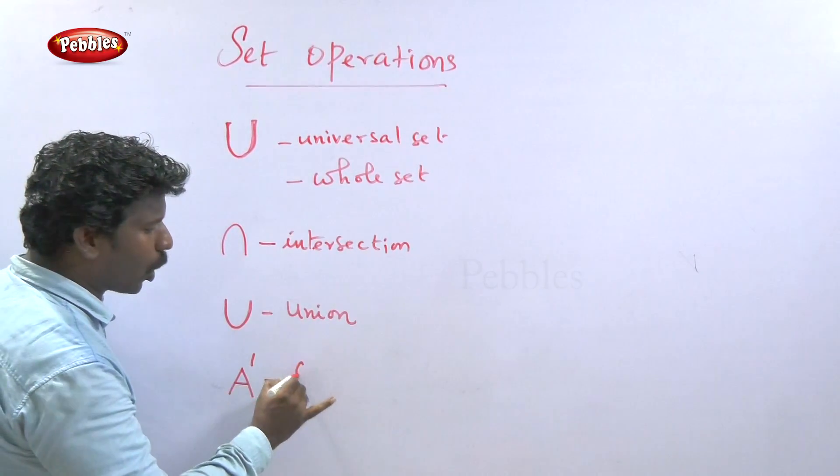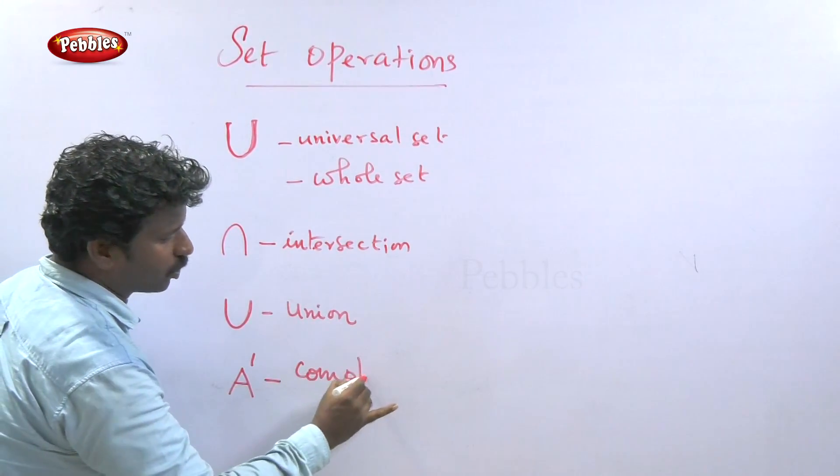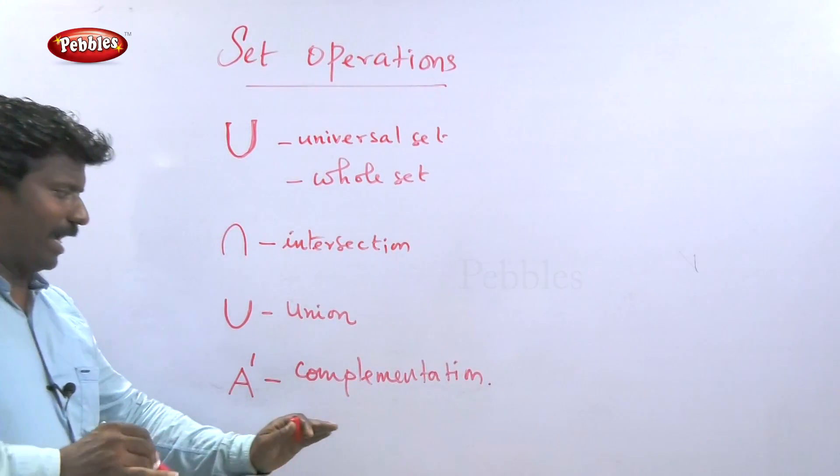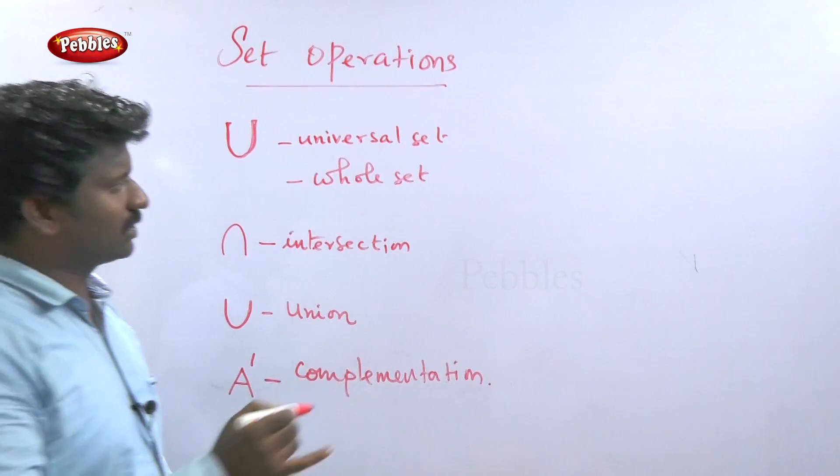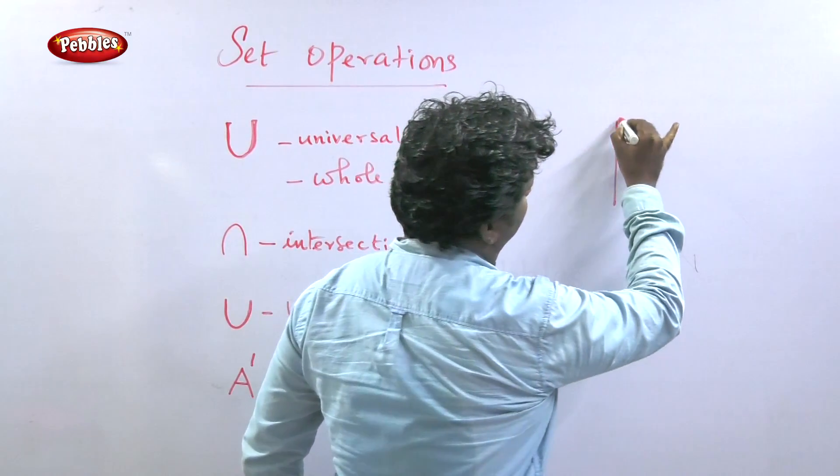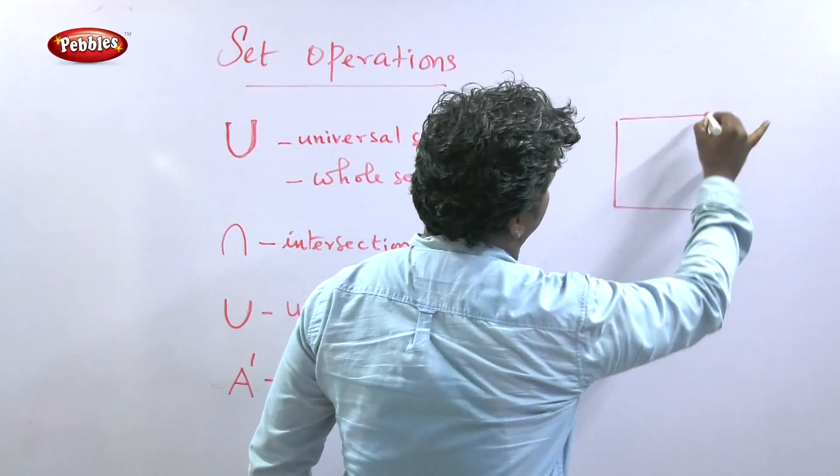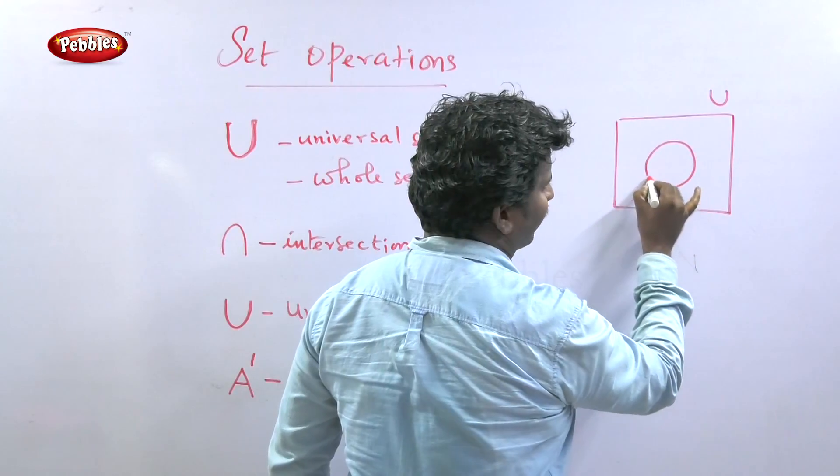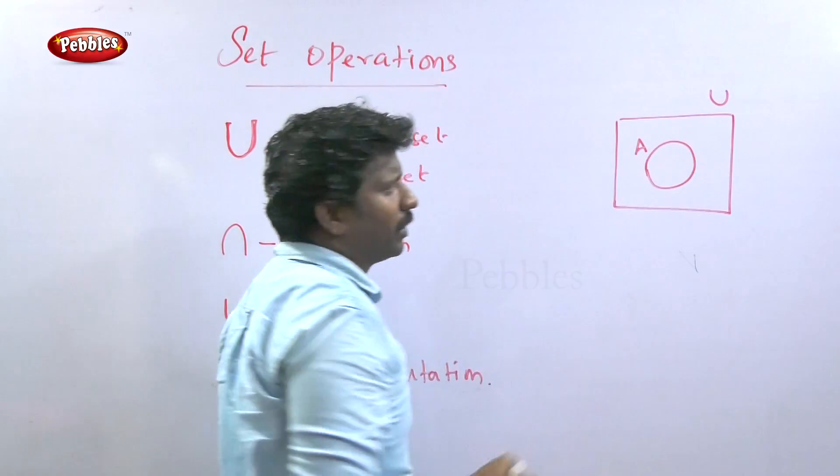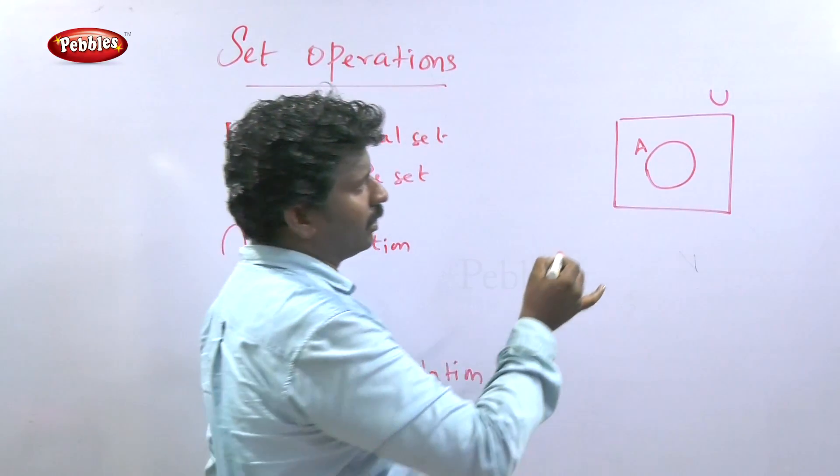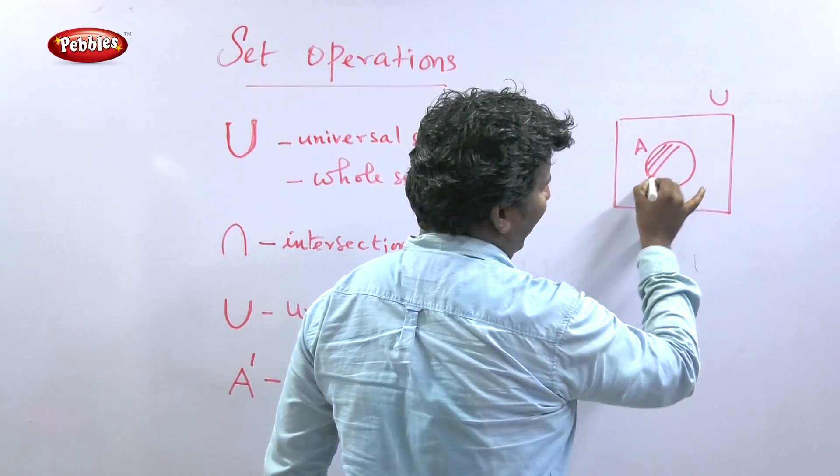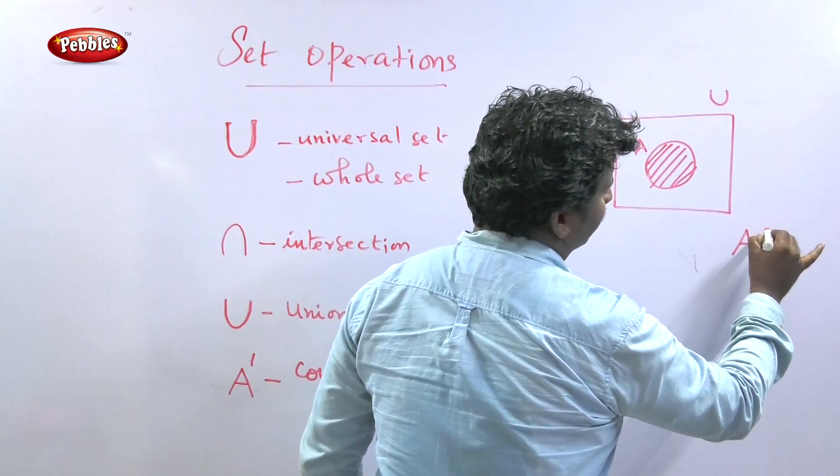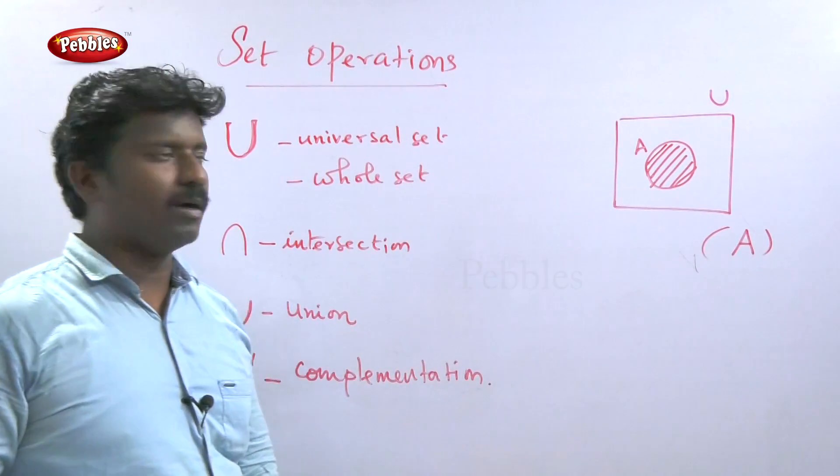Now let me explain complementation. Set complementation is shown with a dash symbol. This is the whole set, the universal set. Here is the diagram.